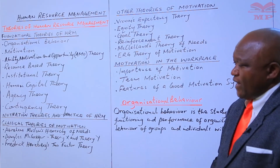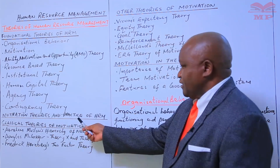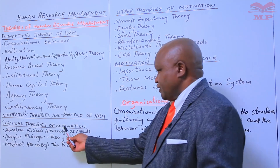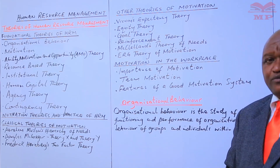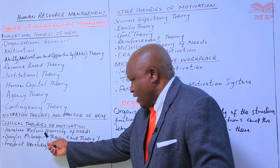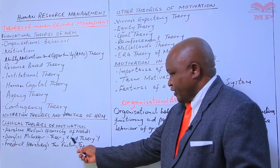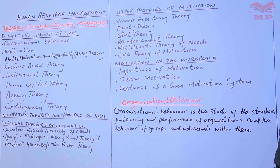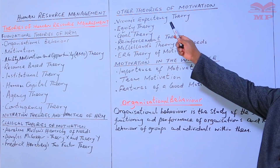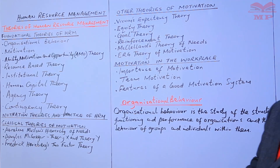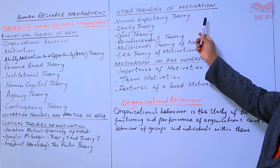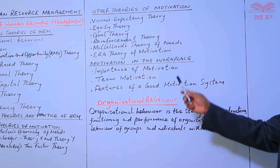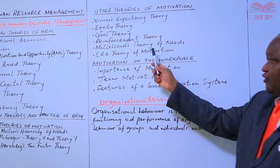We will also look at motivation theories and the practice of human resource management. Under the classical theories of motivation, we look at Abraham Maslow's hierarchy of needs, Douglas McGregor's Theory X and Theory Y, and Frederick Herzberg's two-factor theory. We shall then look at other theories of motivation including Vroom's expectancy theory, equity theory, goal theory, reinforcement theory, McClelland's theory of needs, and ERG theory of motivation.